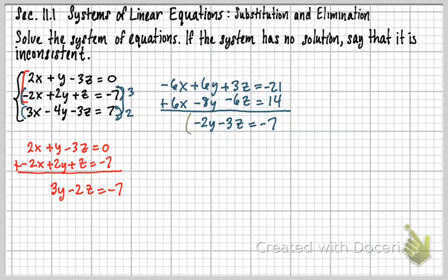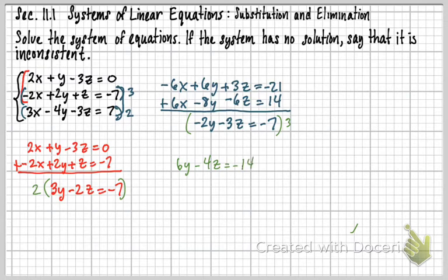I'm going to take the first of those two-variable equations and multiply it by 3, and take the second and multiply it by 2. Working out the first one: that's 6y - 4z = -14. For the other one: that's -6y - 9z = -21.